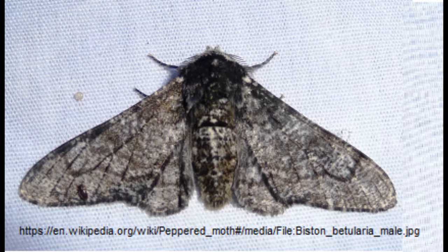It was previously believed the changes in the colors of the moth were an example of natural selection in which the sole factor had been shown to be predation by birds. Currently, as of today, it's considered that the changes in the colors of the moths are an example of natural selection in which one factor is predation by birds. The rest of Kettlewell's experiments and observations still stand.